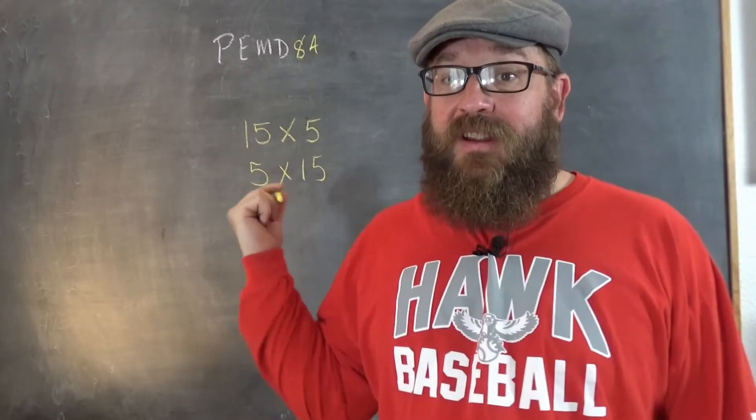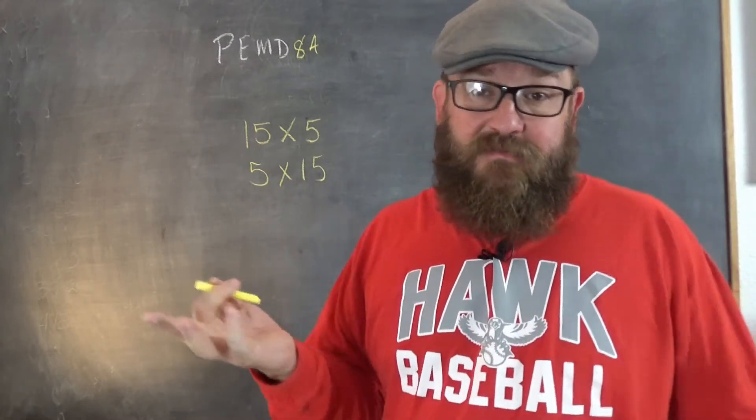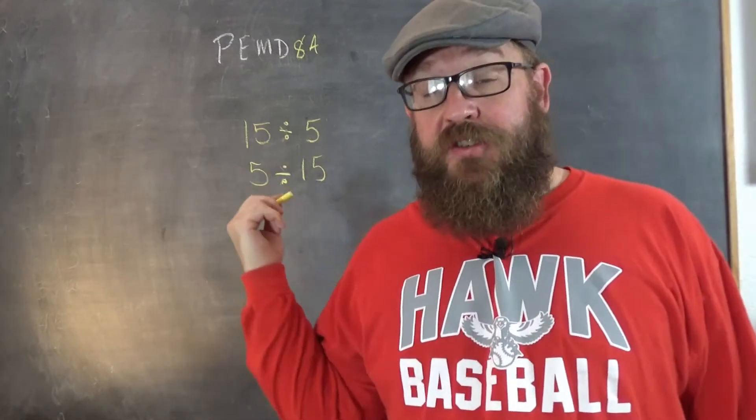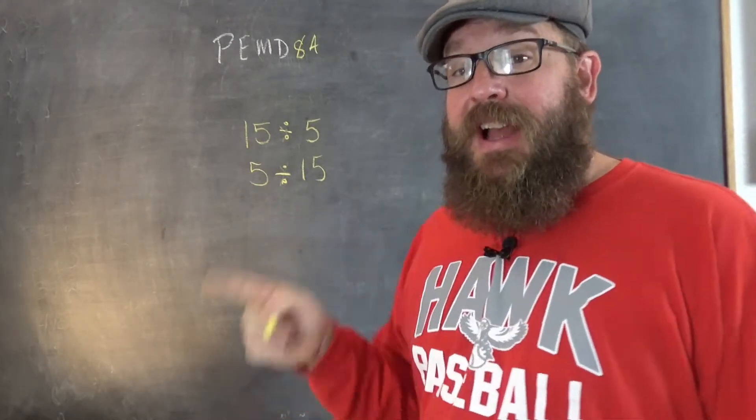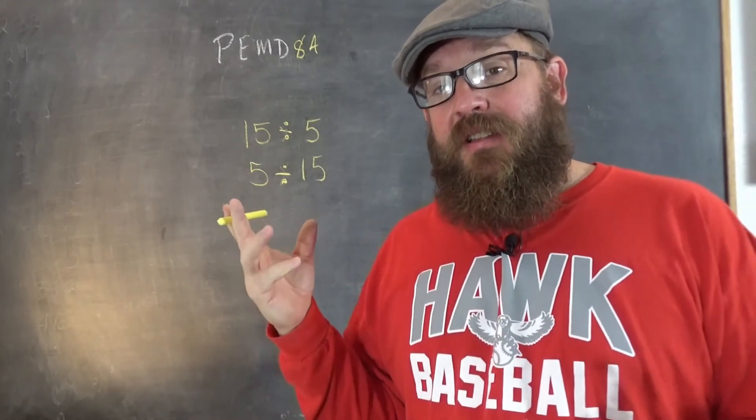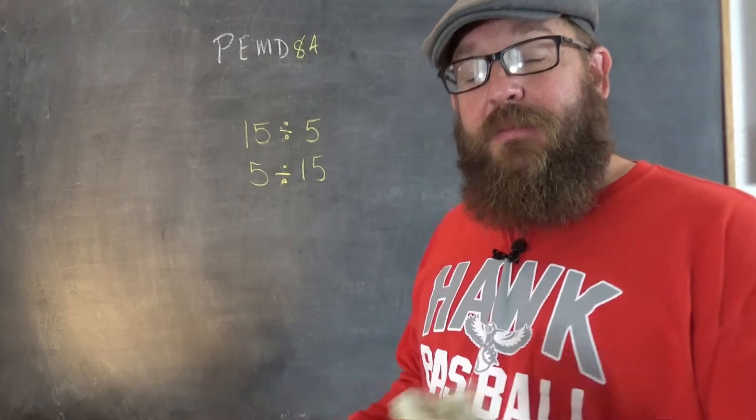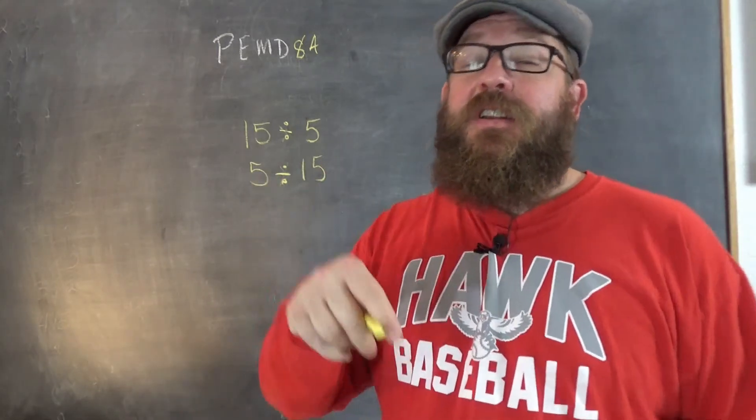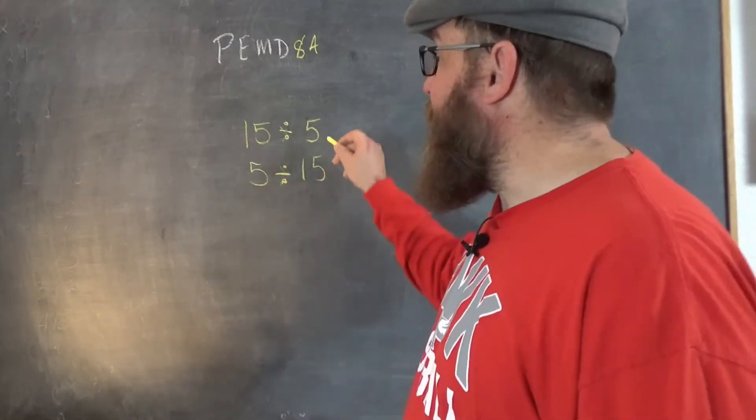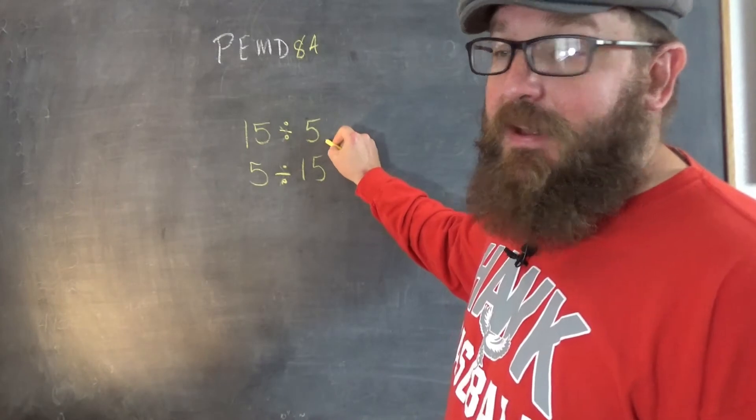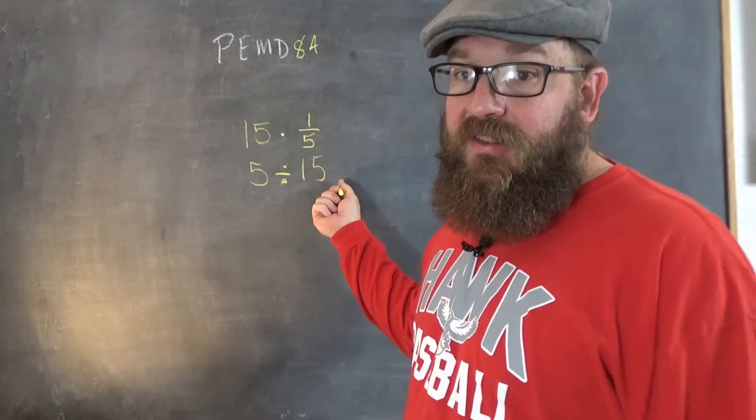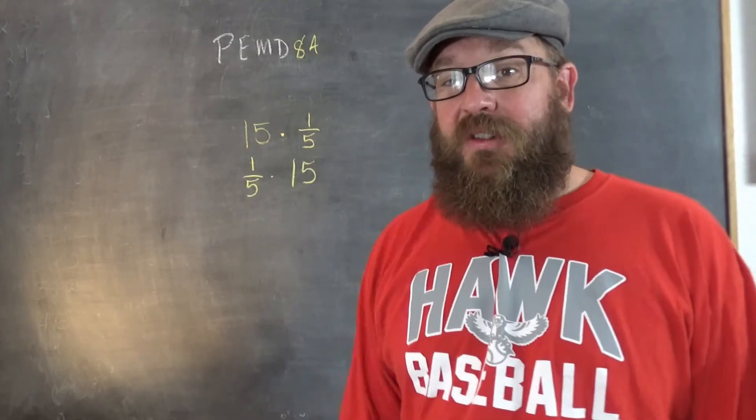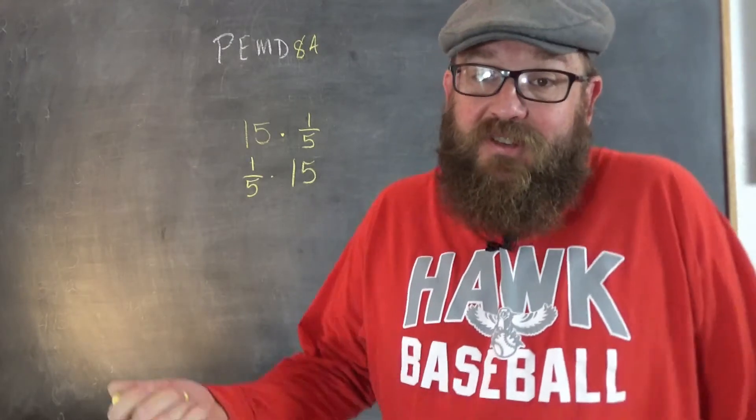You might be saying, wait, you can change the order with multiplication, get the same result, but with division, it doesn't work. And that's true. Those aren't the same. However, there's an issue. The sign kind of goes with the number. The sign implies what we're doing. Division is multiplication of the reciprocal. Here, we are actually multiplying by one-fifth. This is multiplying by one-fifteenth. But those two things, they are the same. Maybe we need a new acronym for the order of operations.